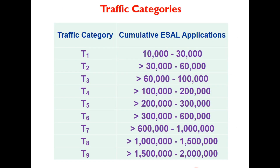There are nine traffic categories in the code, from T1 to T9. T1 is very light traffic with ESAL applications of 10,000 to 30,000, whereas T9 is heavy traffic with 1.5 million to 2 million standard axle applications.